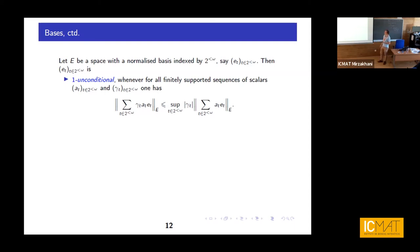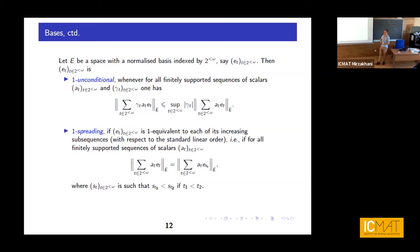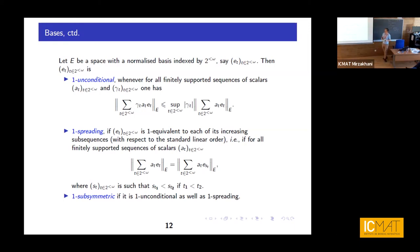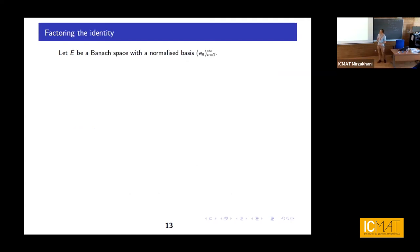One-subsymmetric means being one-unconditional and one-spreading at the same time. A space with a one-subsymmetric basis can be thought of as a very well-behaved space, and we will use it as the base object for our construction. Now comes the issue related to the question of interest — the closeness of the set MF(X) under addition — namely the question of inevitability of the identity in your space. Suppose you have a space with some Schauder basis, and your operator is large on the diagonal, bounded away from zero there. It would be tempting to say this operator should factor the identity.